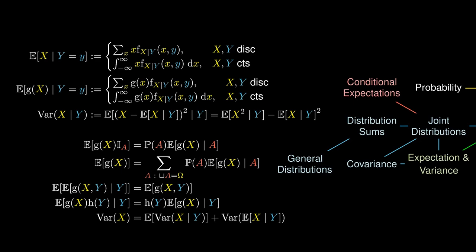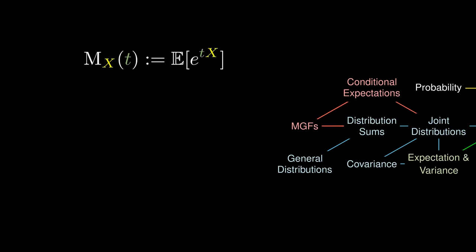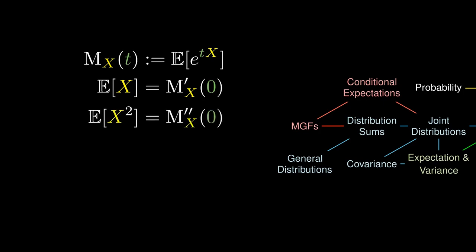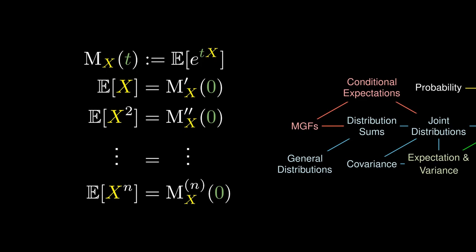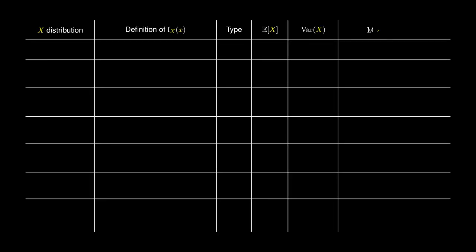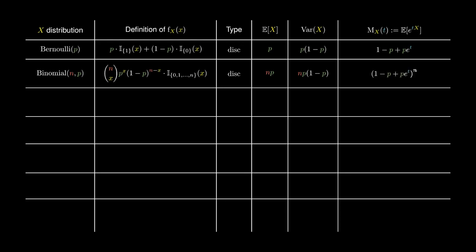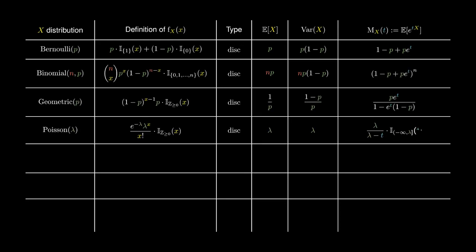These generalized expectations help us define the moment-generating function (MGF) of X as the expected value of e^(tX). The first derivative at zero gives us the expected value of X — the first moment. The second derivative gives the second moment, and differentiating n times and evaluating at zero gives the nth moment. Our seven distributions each have their own MGFs, which can be used to prove connections between them.